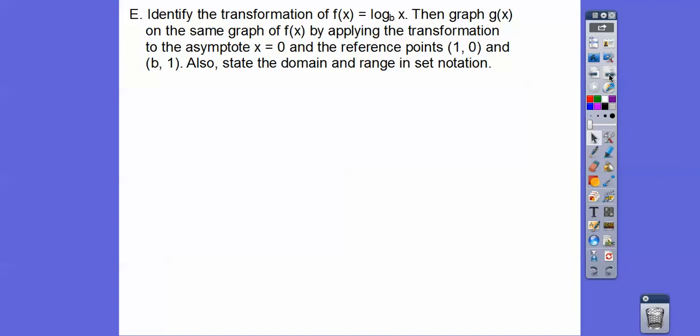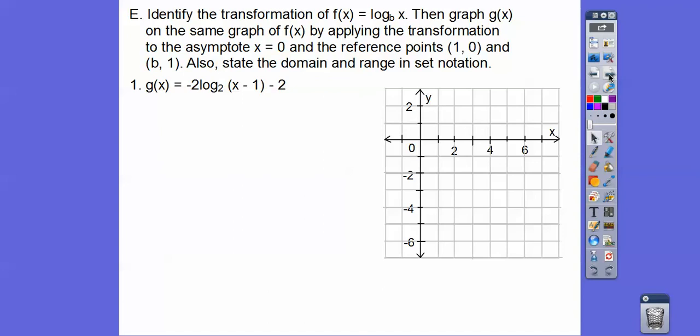Let's identify the transformation of f(x) = log_b(x). Then graph g(x) on the same graph of f(x) by applying the transformation to the asymptote. Our asymptote on the last graphs were x = 0. And we'll use the reference points (1, 0) and (B, 1) and also state the domain and range in set notation. So this was log base 2. What we're going to do is graph log_2(x) first as our parent graph. Log_2(x) would have had an x-intercept at (1, 0) and then it would have went through (2, 1). So here's log_2(x). That's our parent graph.